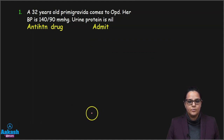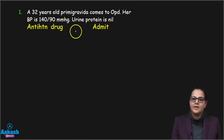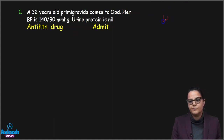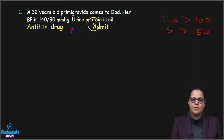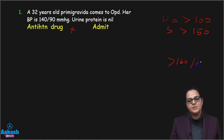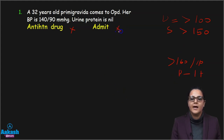Let's apply these principles. Case 1: blood pressure 140/90, urine protein nil. Will we start antihypertensives? No — diastolic must be more than 100 or systolic more than 150. Will we admit? No — BP is not more than 160/110 and there is no proteinuria. Case 2: BP 150/104, urine protein nil. Will we start antihypertensives? Yes — diastolic is more than 100. Do we admit? No — she doesn't meet admission criteria.